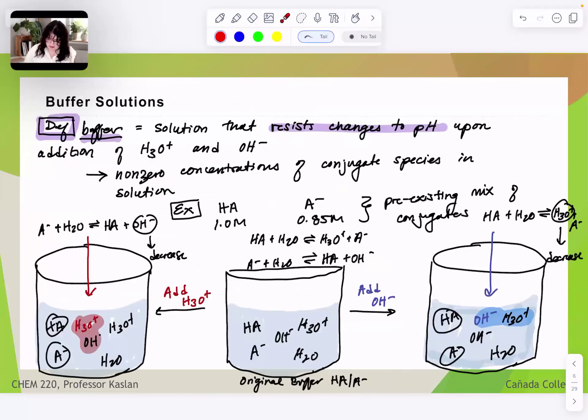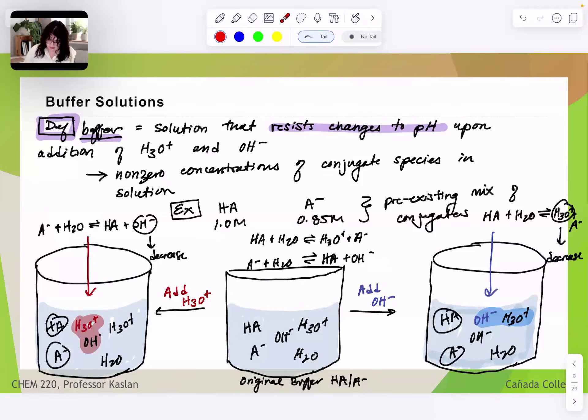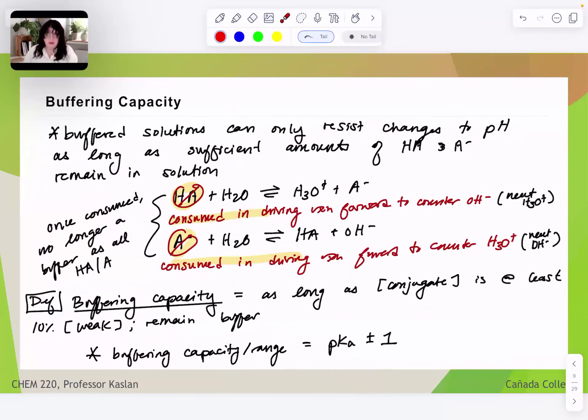And we've also discussed how buffer solutions work. They work by allowing there to be some neutralization of our A-minus with added acid and HA with hydroxide. So because we effectively have both acid and base in solution, then we can neutralize both base and acid that's added. As long as it's added in small quantities that don't exceed the buffering capacity of our buffer.